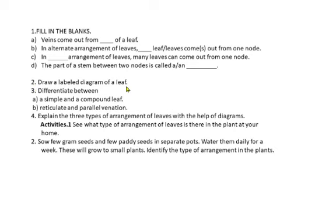Question number two: draw a labeled diagram of a leaf — you will draw a leaf and write the names of different parts. Question three: differentiate between a simple leaf and a compound leaf — you can take the help of a diagram. Also differentiate between reticulate venation and parallel venation — here also you can take the help of a diagram.